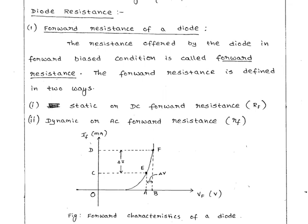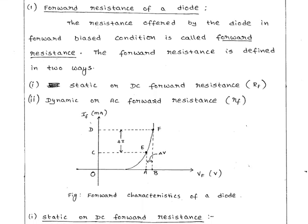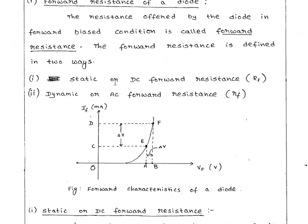I will discuss different types of resistance: forward resistance and reverse resistance. First, forward resistance. When I apply forward bias, I connected the diode in forward bias. I have two types of resistance based on applied voltage: DC forward resistance and AC forward resistance.